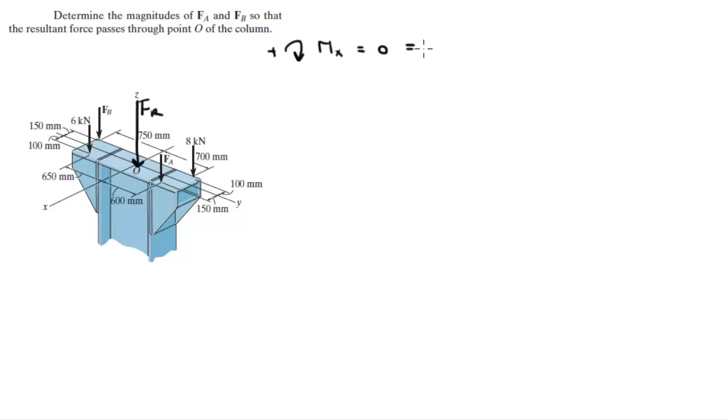So zero equals FA times 0.6 plus 8 times 0.7—notice that I already converted this to meters from millimeters—minus 6 times 0.65, this one right here times 0.65, minus FB times 0.75. This is FB times this 0.75. So these are the moments about the x, and they all add up to zero.